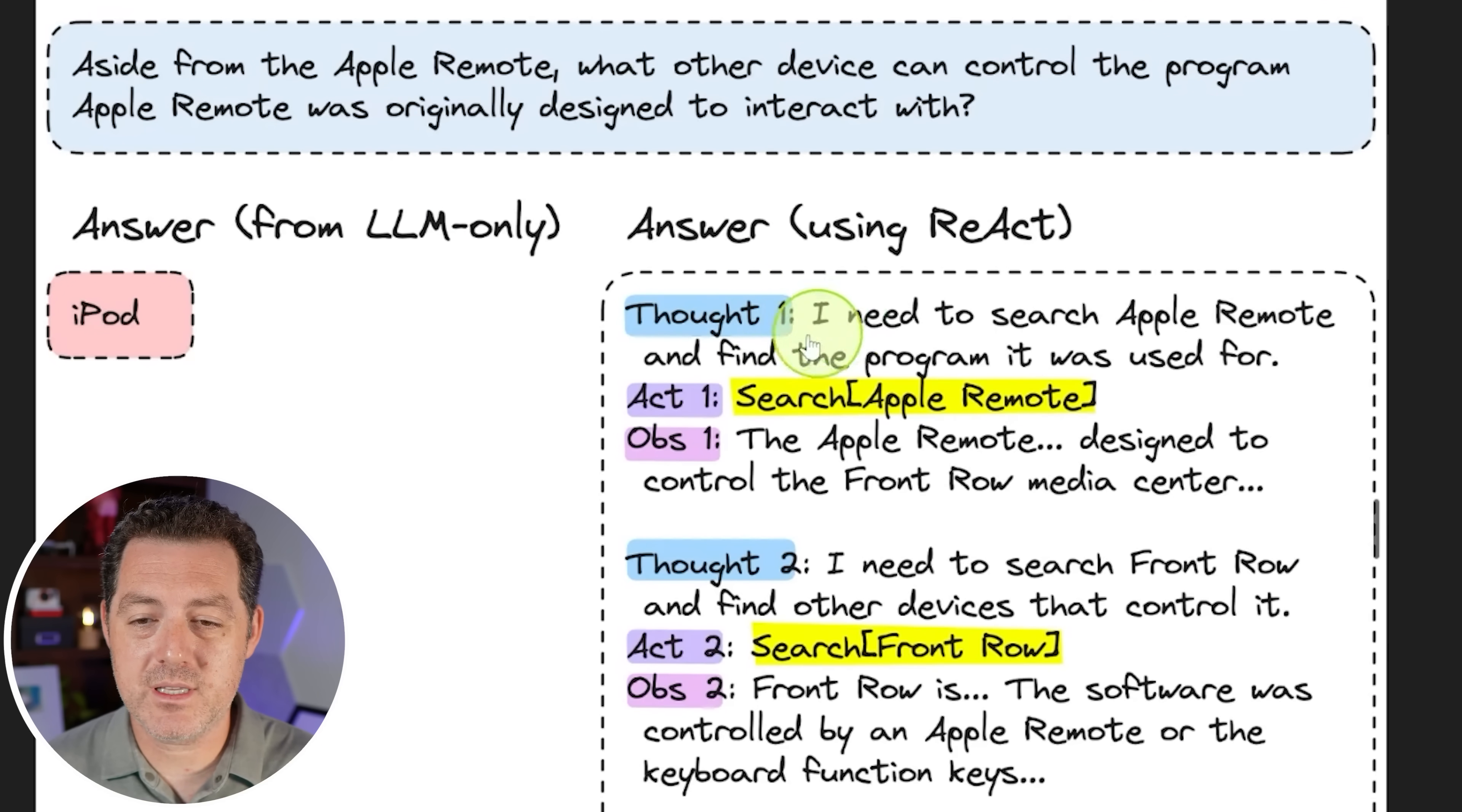So let's look what that looks like. Thought one, and you can just think about each of these thoughts as maybe different agents, but they can be structured in different ways. I need to search Apple remote and find the program it was used for. So search Apple remote. And this might be an external knowledge source that details how the Apple remote is used or what it's used for. Observation one: the Apple remote designed to control the front row media center. Then thought two, I need to search the front row and find other devices that control it.